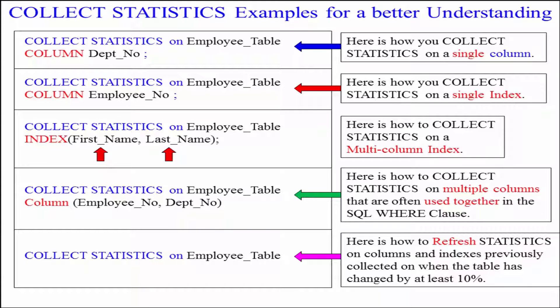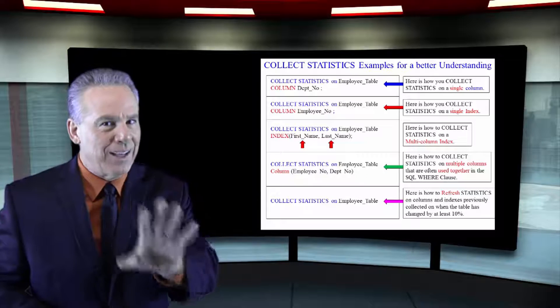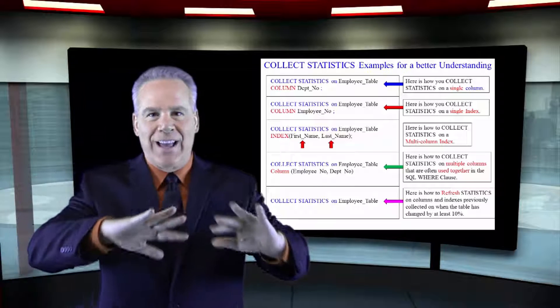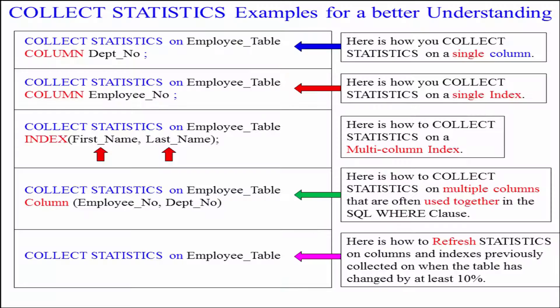Collect statistics on employee table, column, open paren, employee number Depno. You see, these two columns are going to be used in the WHERE clause of statements together all the time. So, that's why sometimes, you're going to actually collect, at the column level, multiple columns, because you know it's like bread and butter in that SQL WHERE clause. And lastly, this is interesting, collect statistics on employee table. Hey, is that going to collect all statistics on all columns? No.